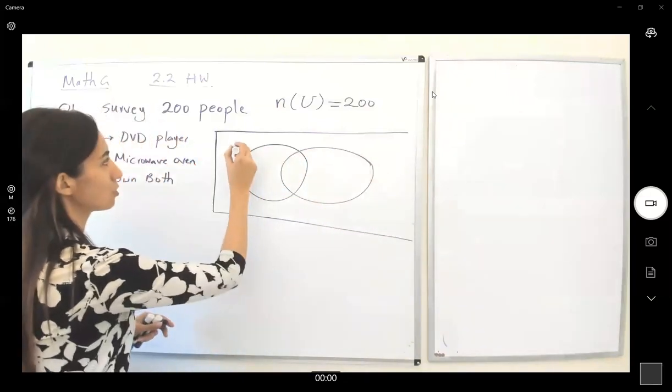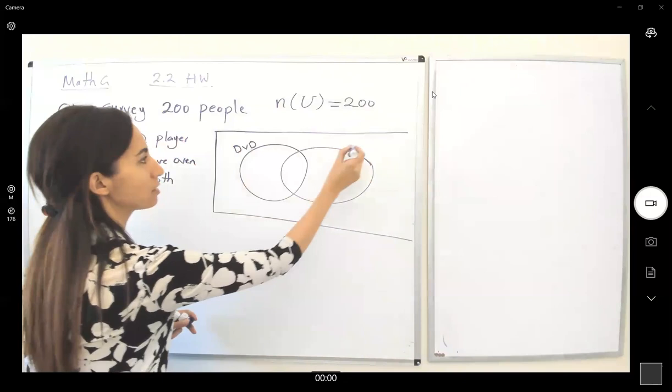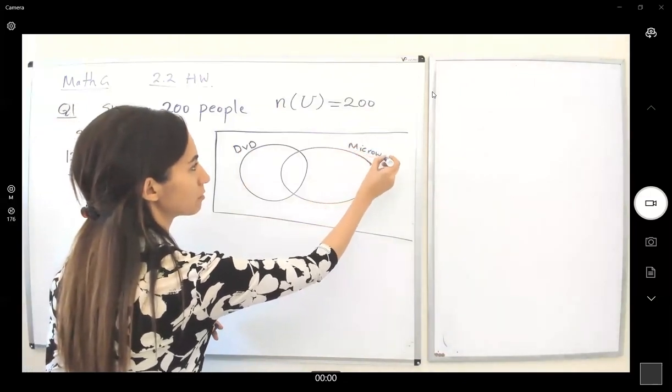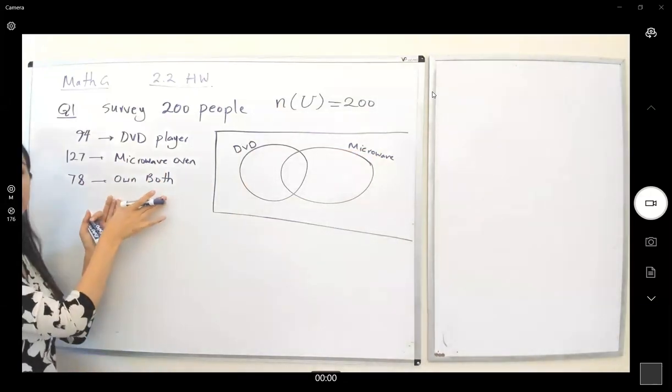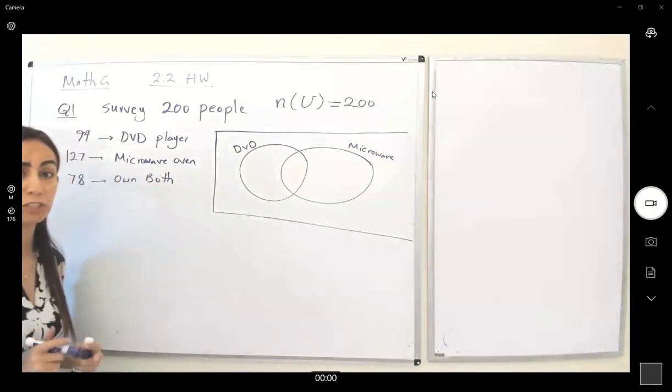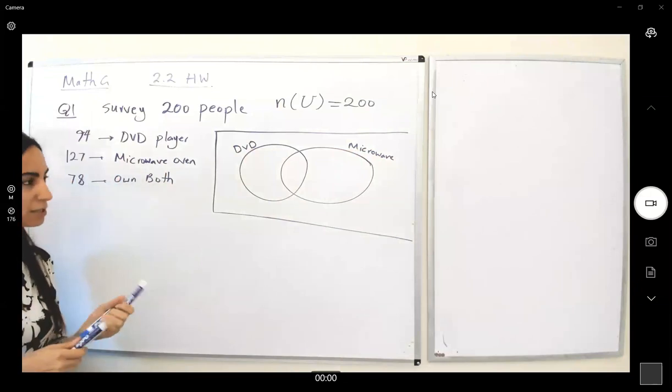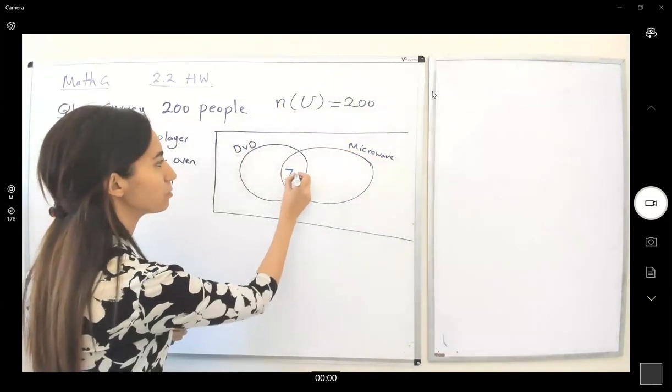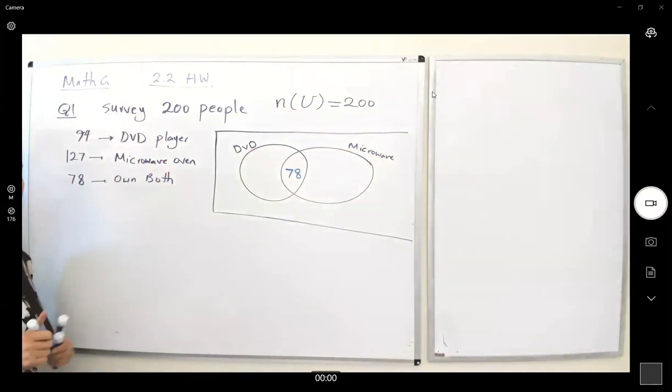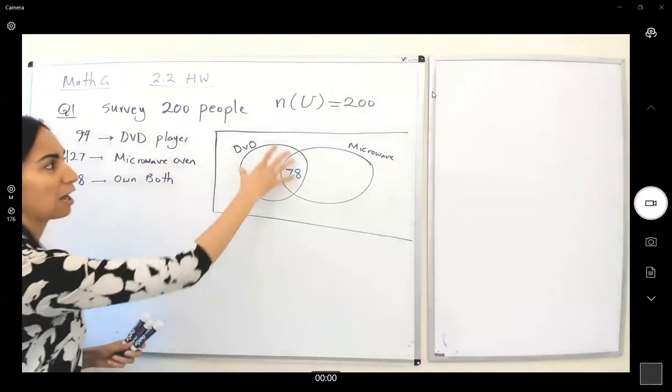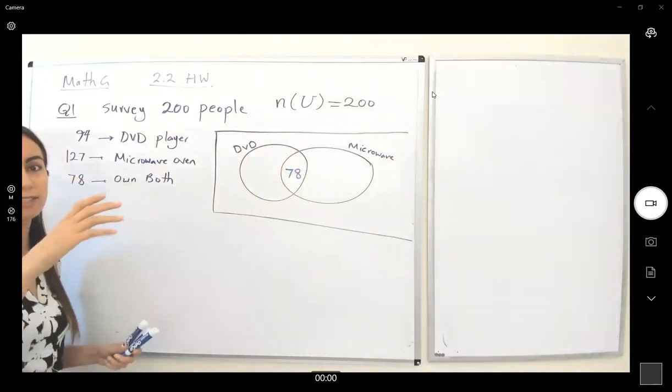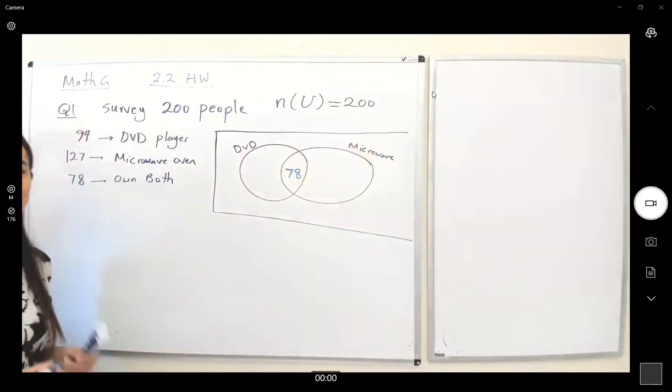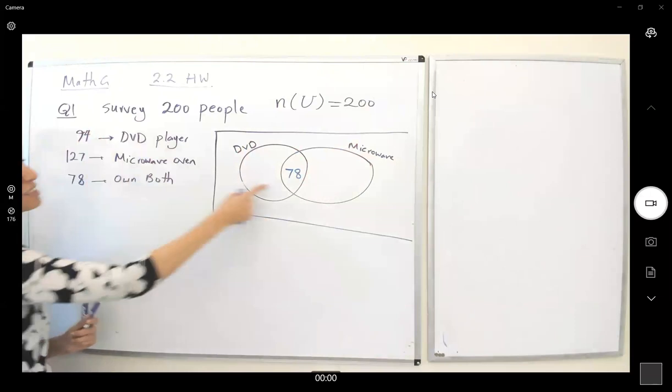So what information is given to you? Let's start by writing the center. The intersection between these two sets has cardinality 78. Let's write this: 78 people have both DVD player and microwave oven. What's the meaning of that? It means that out of the people who own DVD players, 78 of them also own a microwave oven.